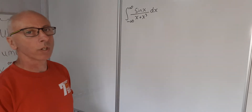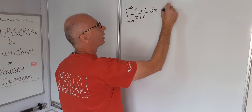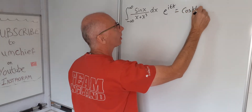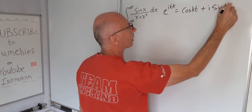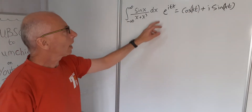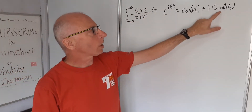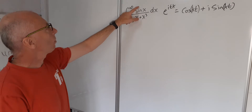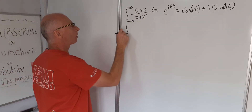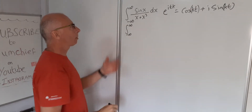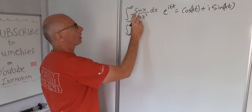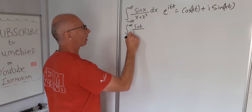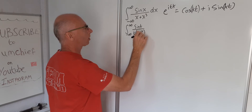Using Euler's identity, we know that e^(ikt) equals cosine(kt) plus i·sine(kt). Since we're dealing only with sine, we can take the imaginary part of the answer — the real part is associated with cosine so we may not need it. Let's write the integral in terms of t, and factor the denominator as t times (1 plus t squared).